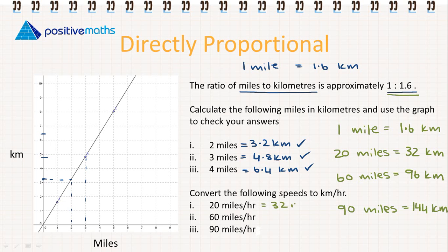So now our speeds are going to be 32 kilometers per hour, we're going to have 96 kilometers per hour and 144.